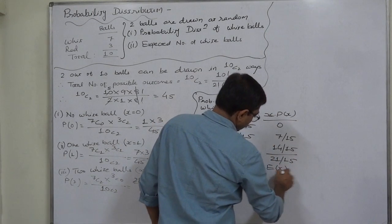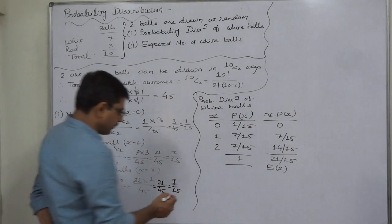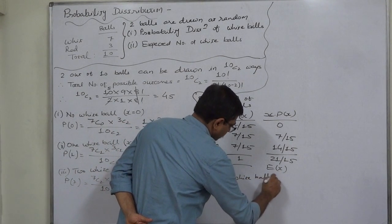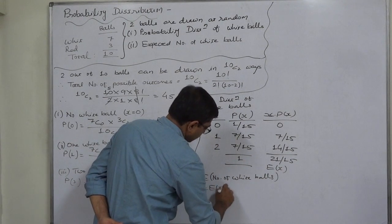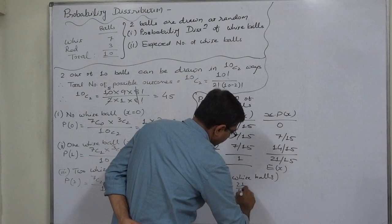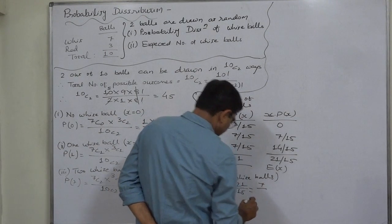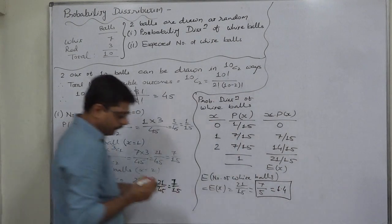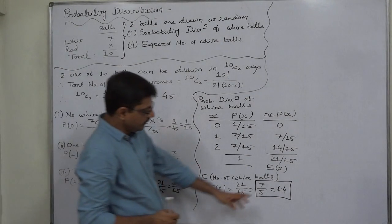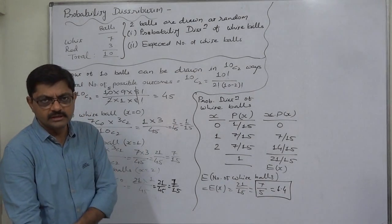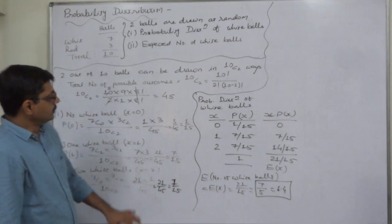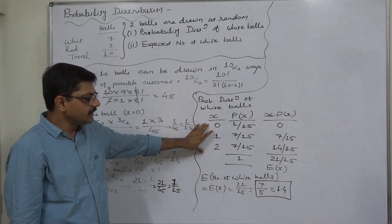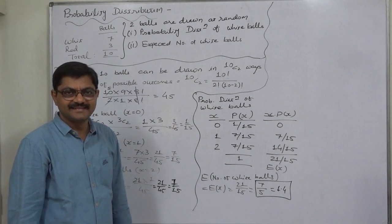The summation gives 21/15, which is E(X) — the expected value, sigma of x times P(x). So the expected number of white balls equals E(X) equals 21/15. Both numerator and denominator can be divided by 3, giving 7/5, which equals 1.4. Although the number of balls can never be a decimal value, this is the result of the calculation. In this way we can construct a probability distribution and calculate the expected value. Thank you very much.